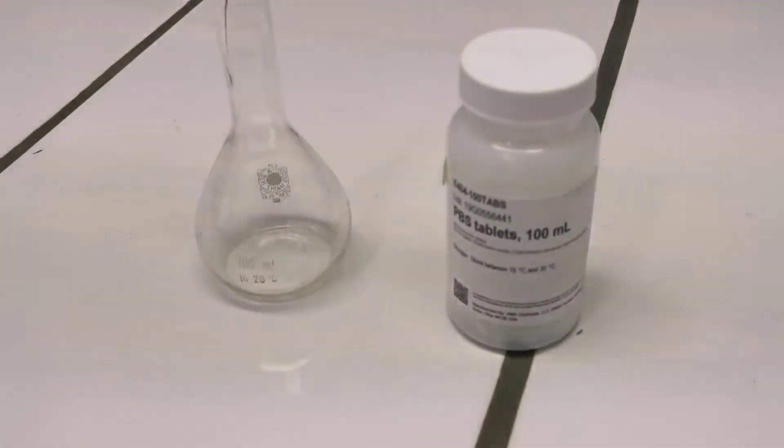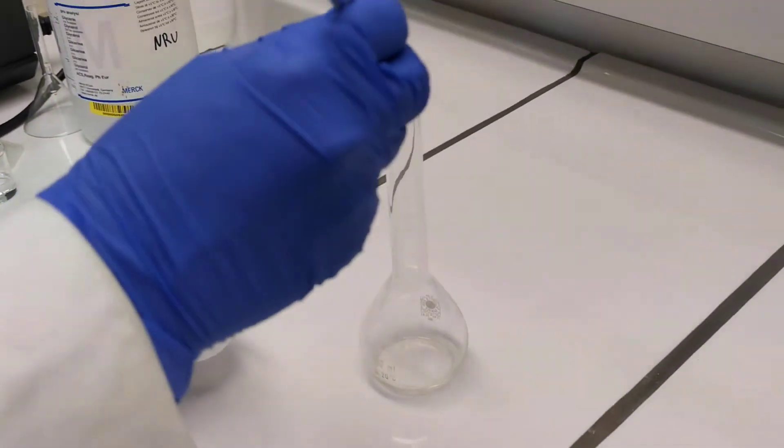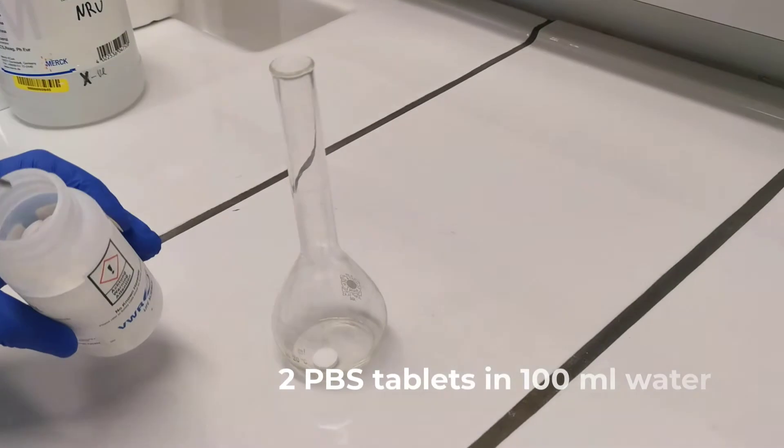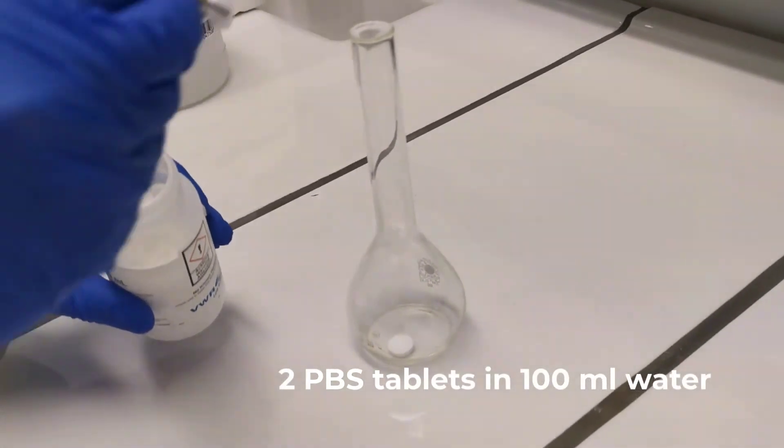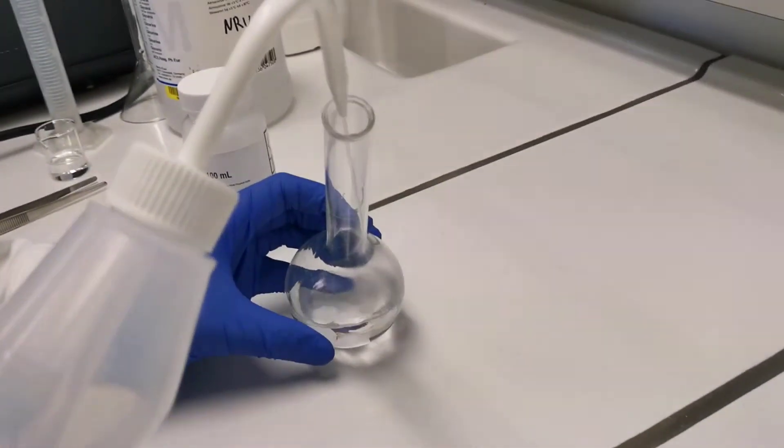It is now time to prepare some phosphate buffered saline, or PBS. You can get PBS as tablets. For us, we need two tablets to dissolve in 100 milliliters of distilled water to get 2x PBS.